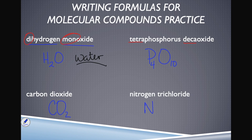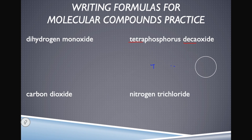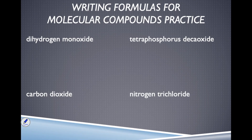Trichloride: chloride comes from chlorine, symbol Cl. The prefix tri means three chlorines, so we write Cl₃. That gives us NCl₃. That covers name to formula. I suggest you pause the video now, do some practice questions going name to formula, then come back and watch the examples of formula to name, and then do your practice on formula to name.